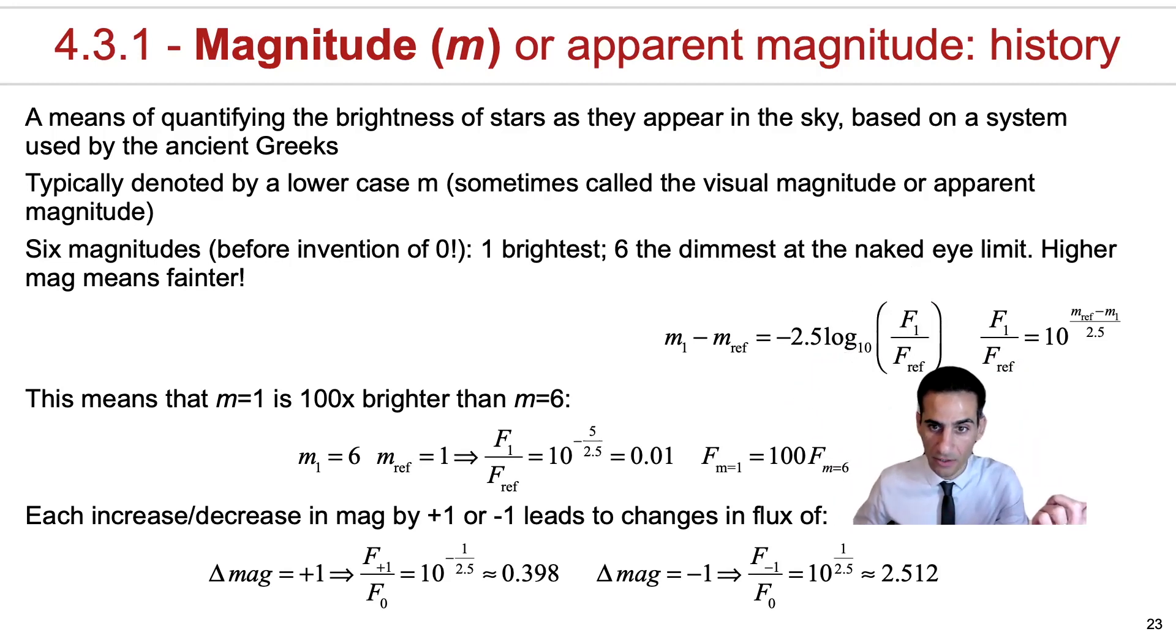This obviously means there's consequences in terms of the full range of the Greek system of magnitudes from magnitude one to six: a magnitude one star was a hundred times brighter or with a higher flux than the magnitude six star. And within the system, the scaling and the way changes is actually still the same.